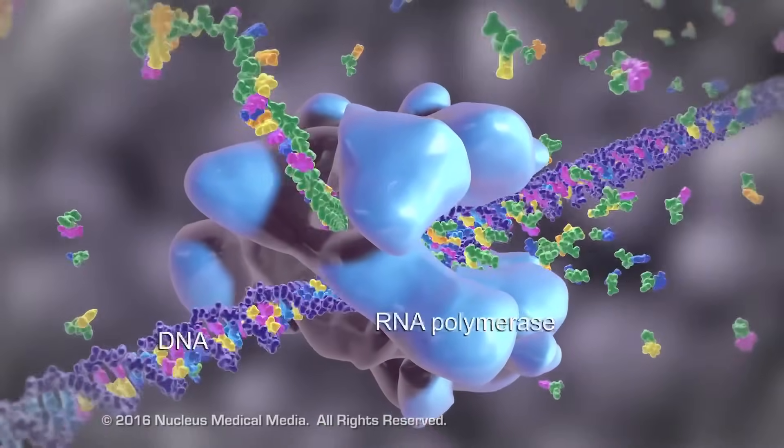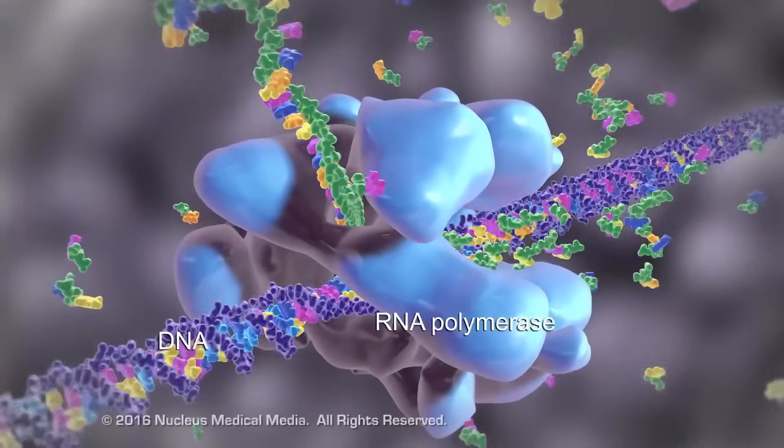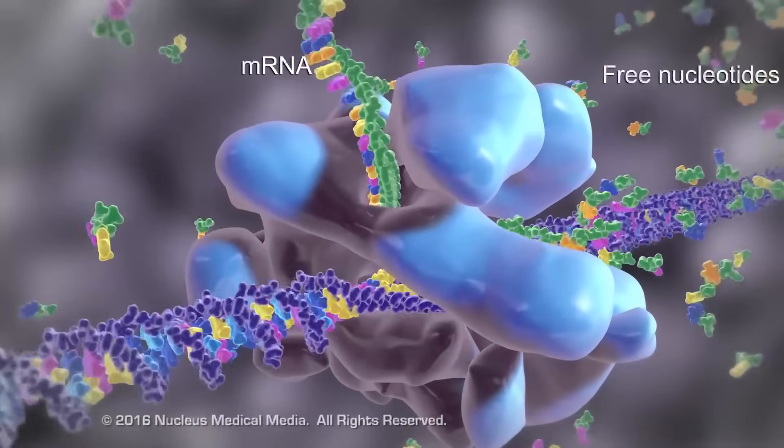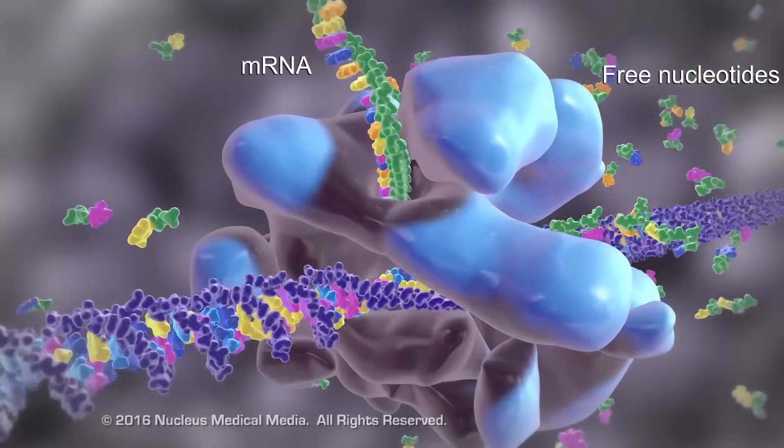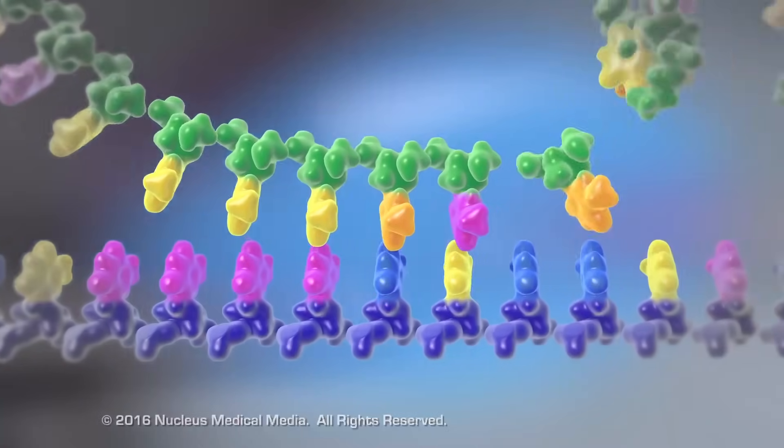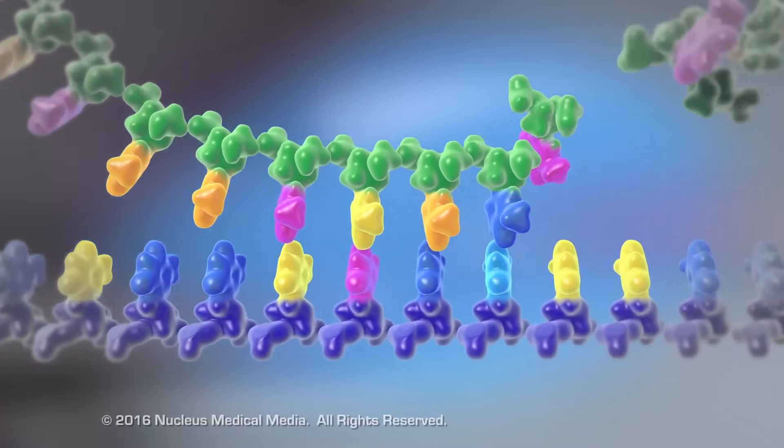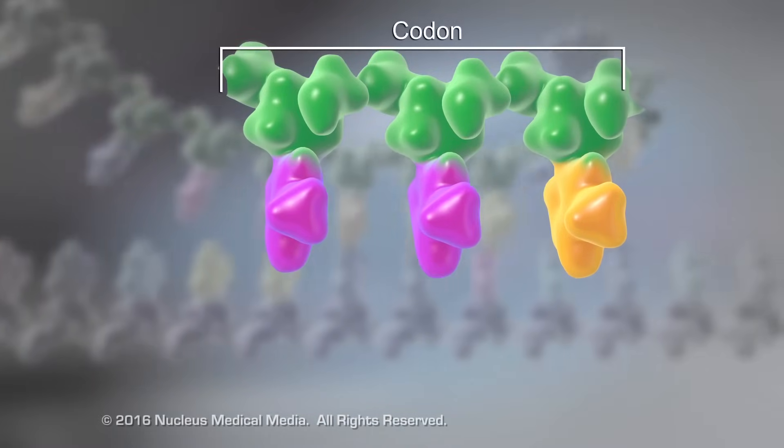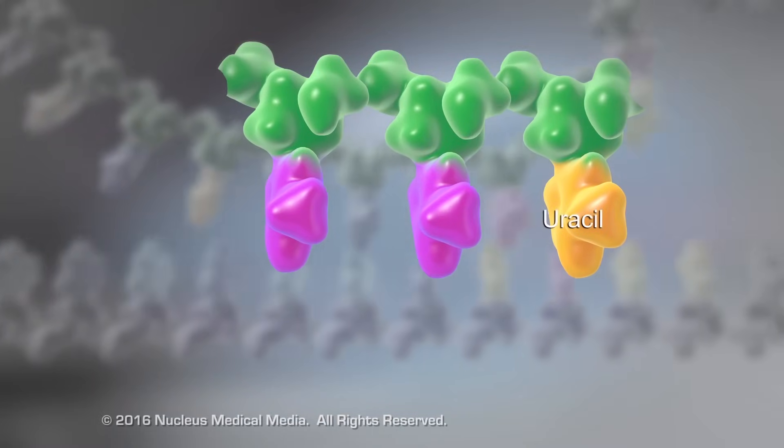RNA polymerase reads the base triplets to build messenger RNA using free nucleotides. Corresponding messenger RNA triplets are called codons. In mRNA codons, uracil replaces thymine.